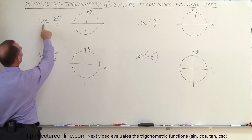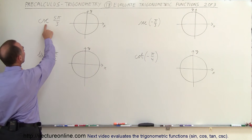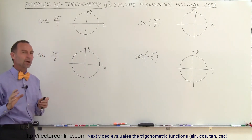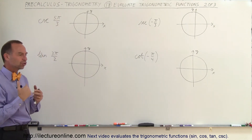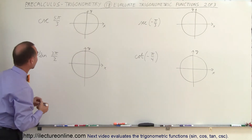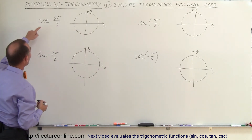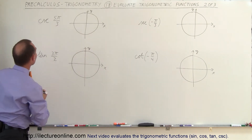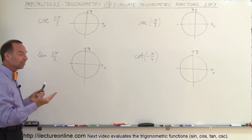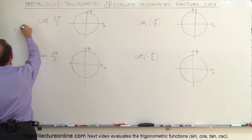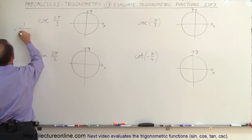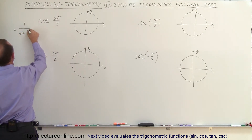Here we have the cosecant of 5π over 3. First we want to change that to a more familiar trigonometric function, which is 1 over the sine. So the cosecant is the same as 1 over the sine, so we can write this as 1 over the sine of 5π over 3.